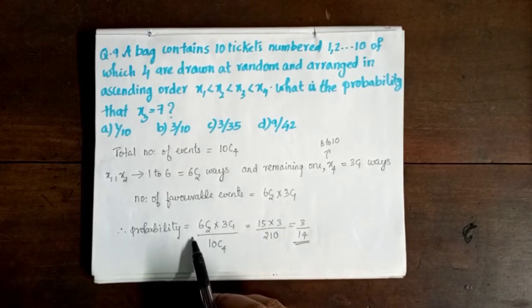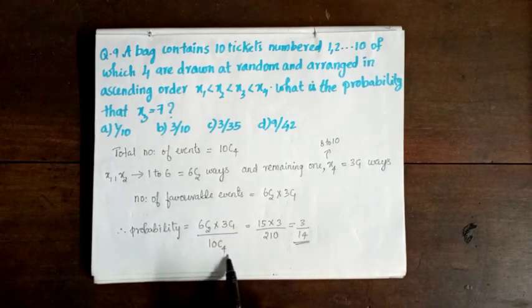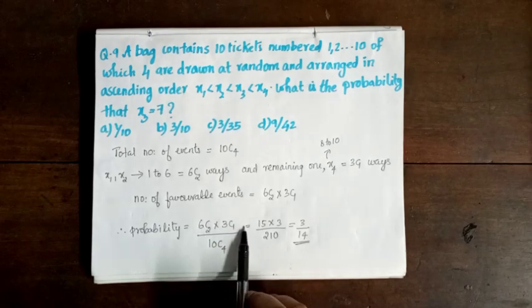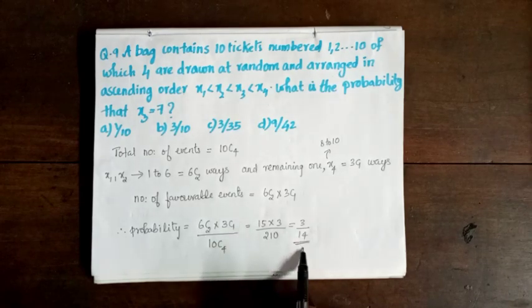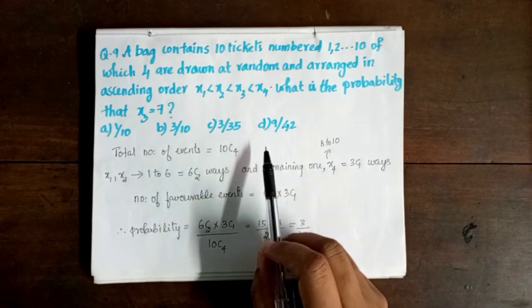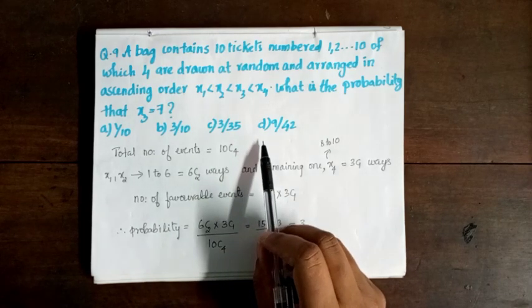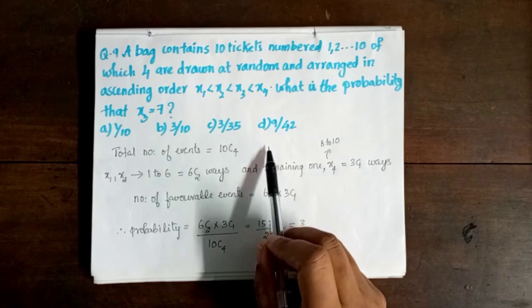Therefore, the probability is 6C2 × 3C1 divided by 10C4, which equals 3/40.